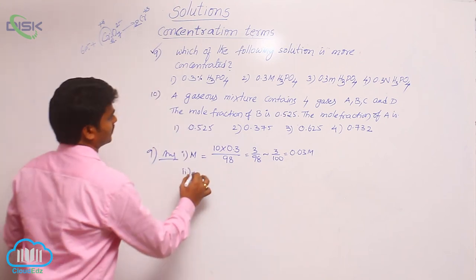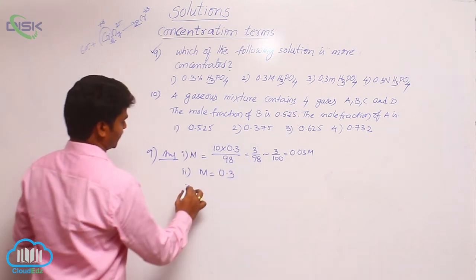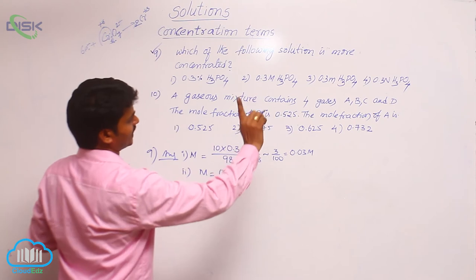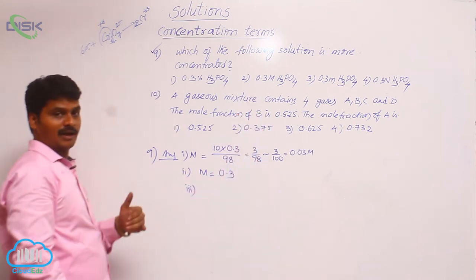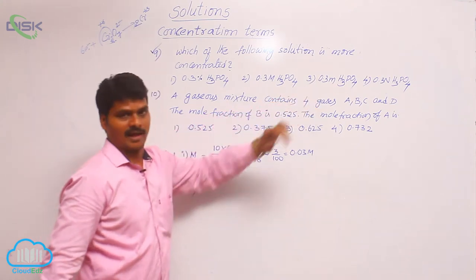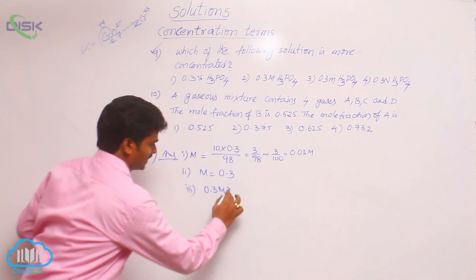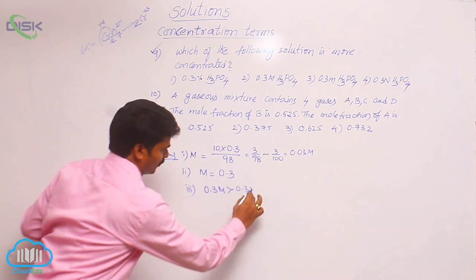What is the second option? Here directly molarity is given, 0.3. What is the third option? Here 0.3 molal. You know always, if concentration is 0.3 molal or 0.3 molar, which is more? Always 0.3 molar is greater than 0.3 molal.